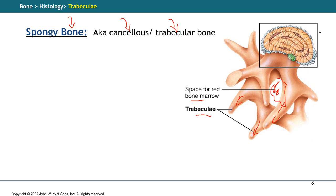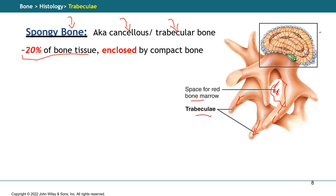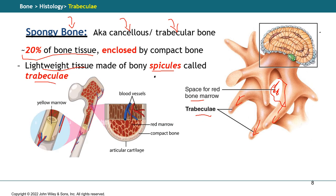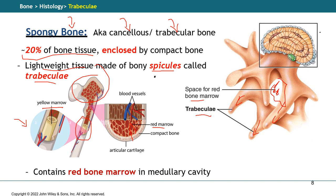Quick facts about the spongy bone: the compact bone represents 80%, while this one represents 20% of the bone tissue, and it is enclosed by compact bone. Different from the compact bone, it is a lightweight tissue with trabeculae. In the diaphysis you have yellow bone marrow, while in the epiphysis you have red bone marrow inside the compact bone. The red bone marrow is where blood cells undergo mitosis — it is the origin of those cells.